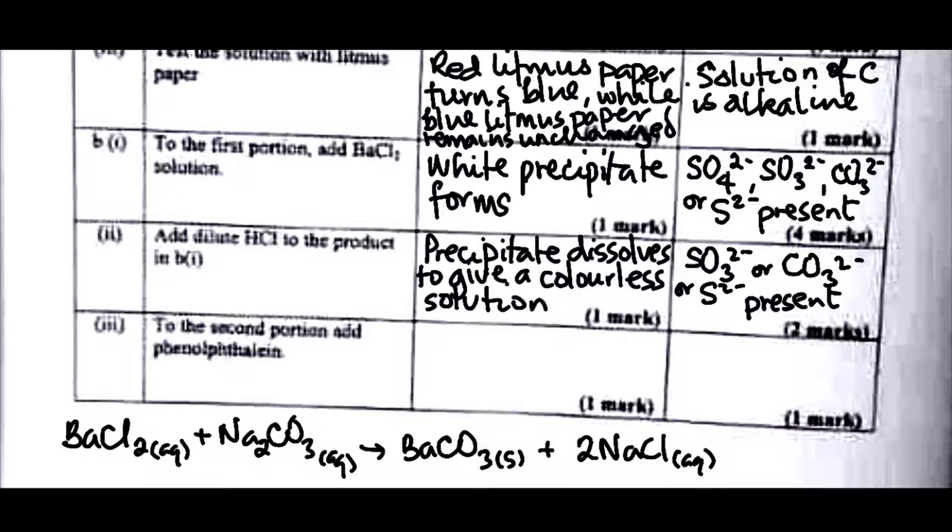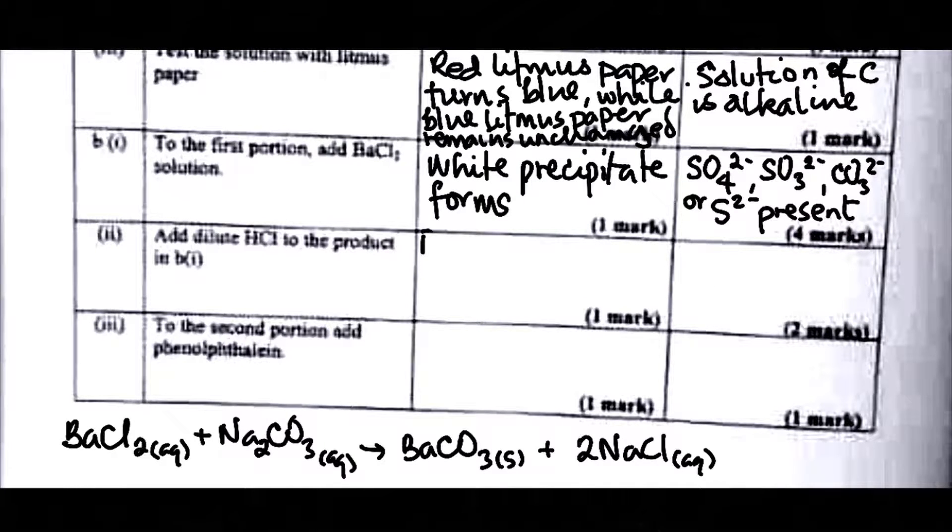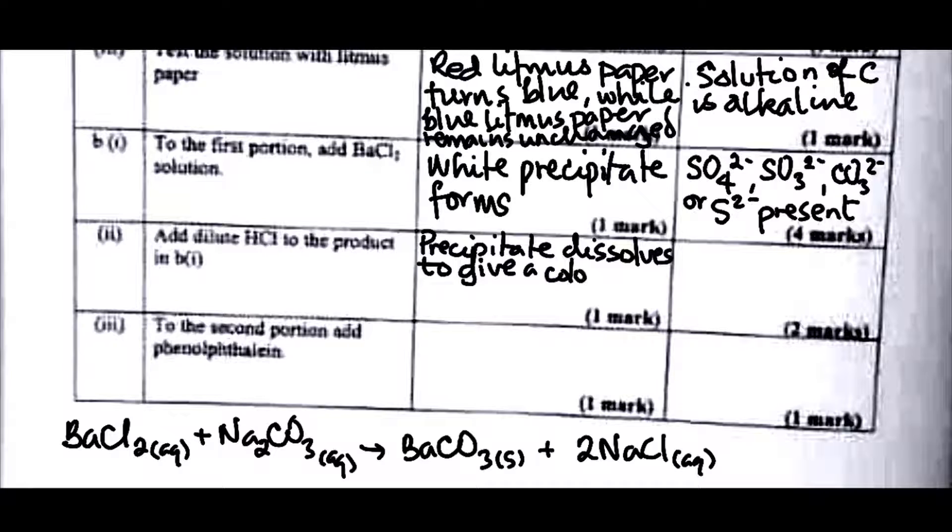Now it's only when you pass the solution through lime water that you confirm that it is CO3²⁻. Let's even look at this again. Since there's no other test that will help us confirm that it is CO3²⁻, let's correct this. Let's say the precipitate dissolves to give a colorless solution and effervescence of a gas, of a gas that turns lime water milky.